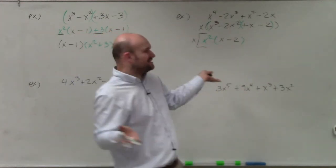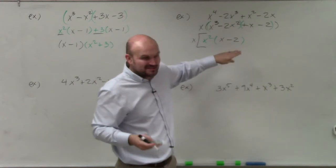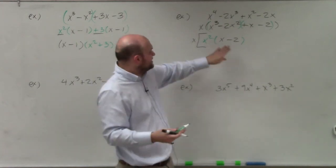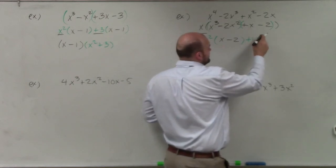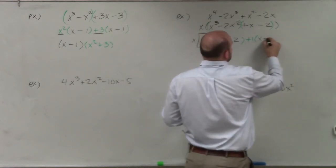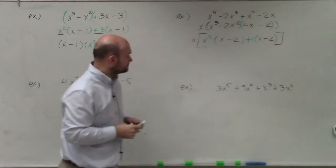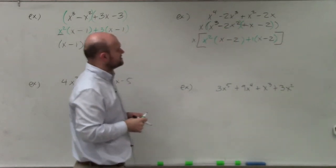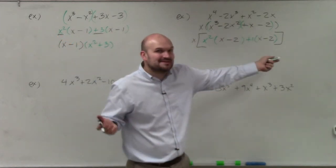But again, I want to make this the same as this x minus 2. So I need to factor something out so I can have x minus 2 in parentheses. So what I can factor out is a positive 1. Because what is positive 1 times x minus 2? x minus 2.